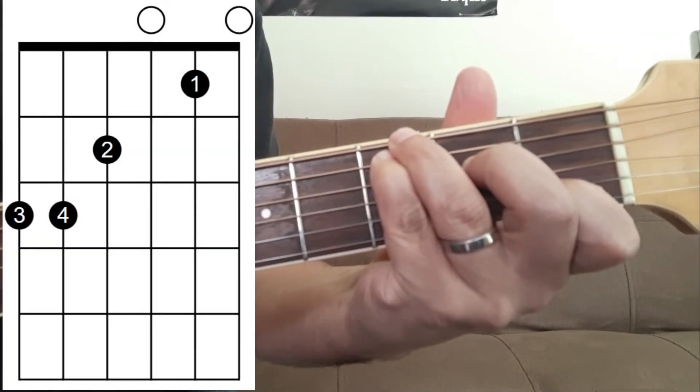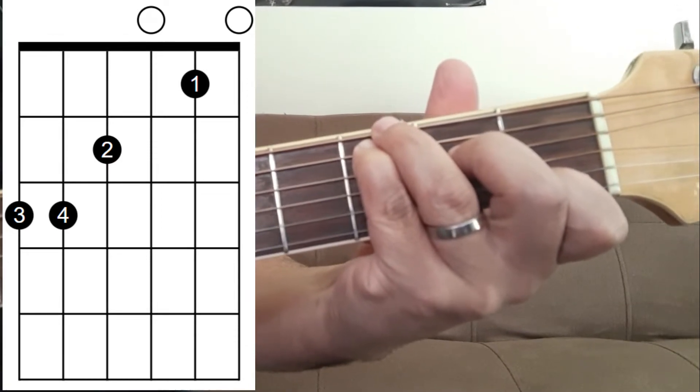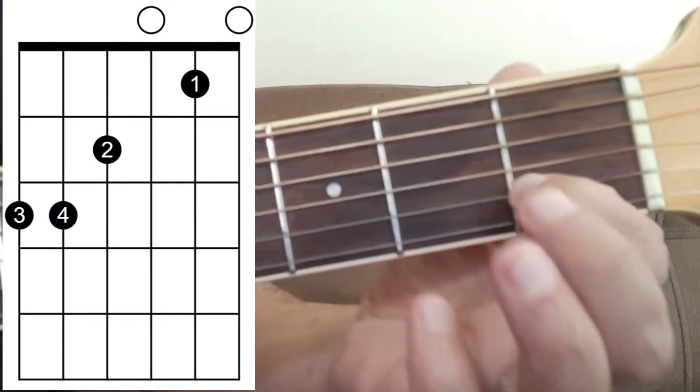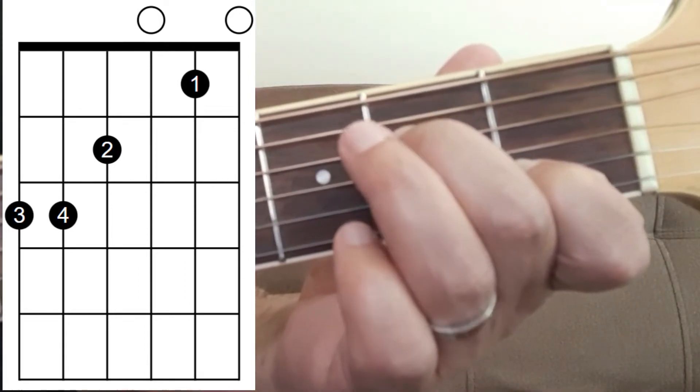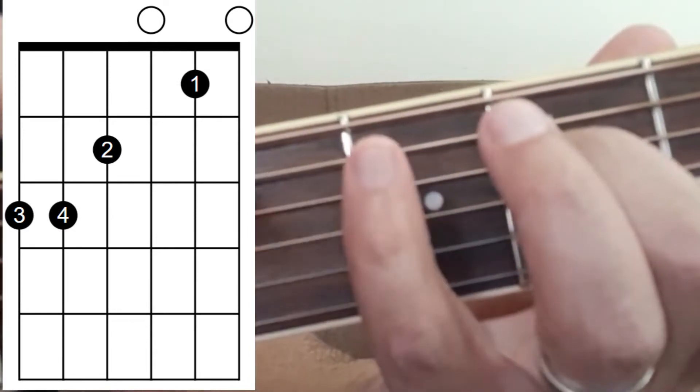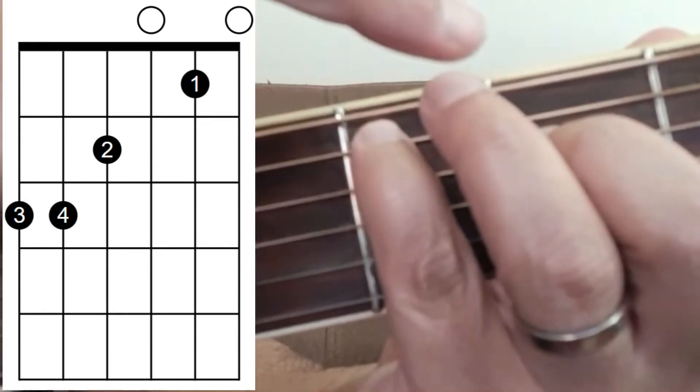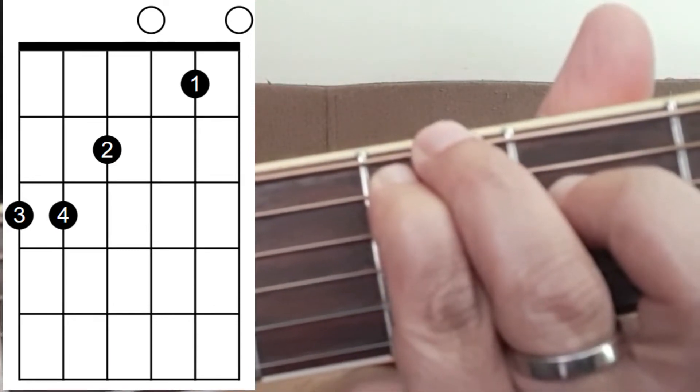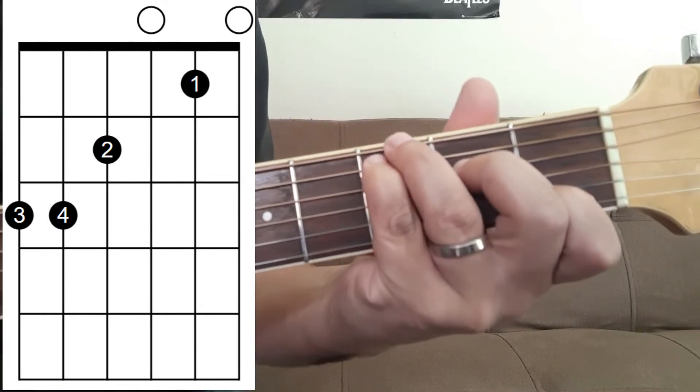Here's version 2 of the open C major chord and this time we're using all 4 fingers. We've got the 1st finger again on the 1st fret of the B string, 2nd finger in the same place, 2nd fret of the D string but now we have the little finger on the 3rd fret of the A string and this finger here, the 3rd finger is on the 3rd fret of the low E string and it gives you a much deeper sound.